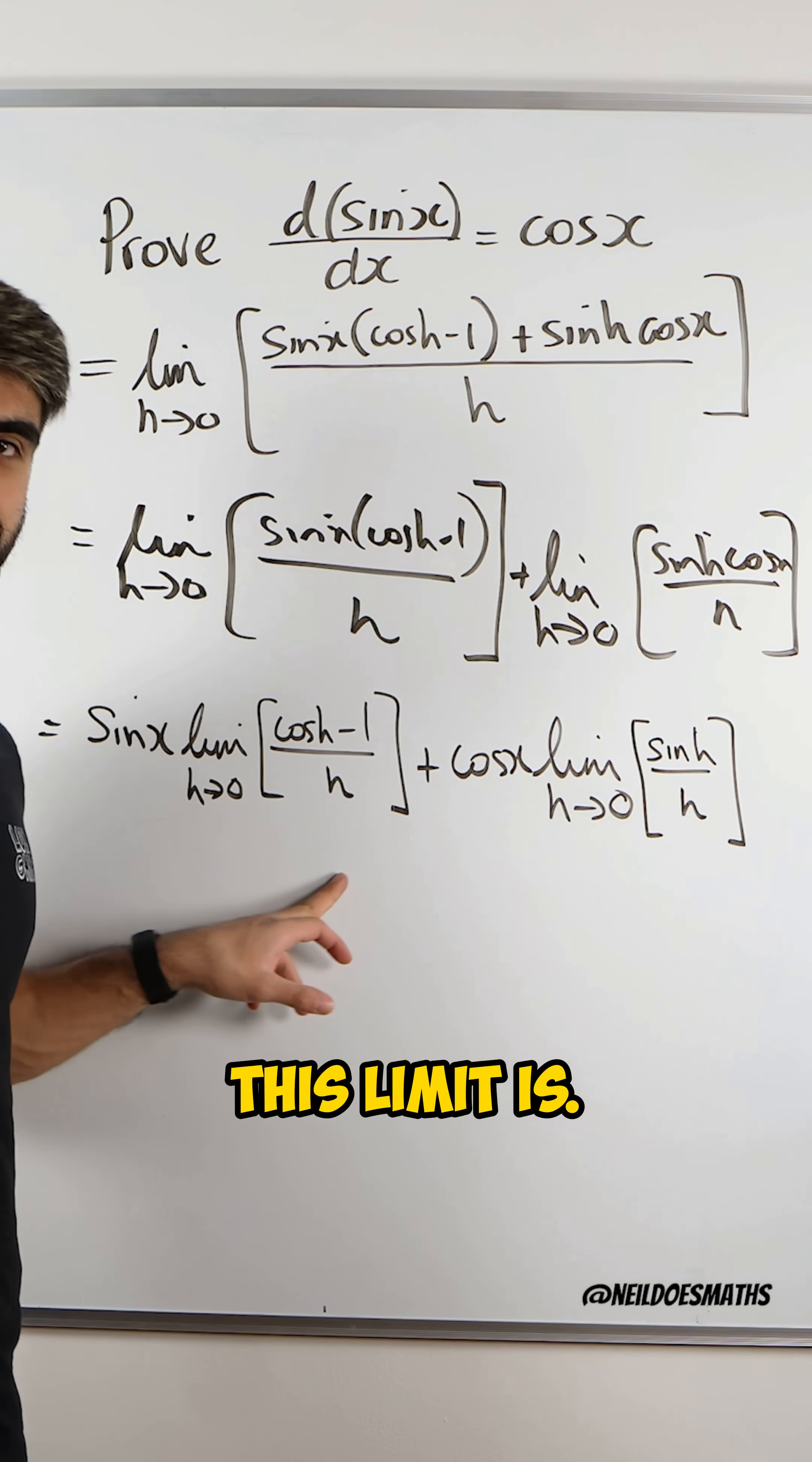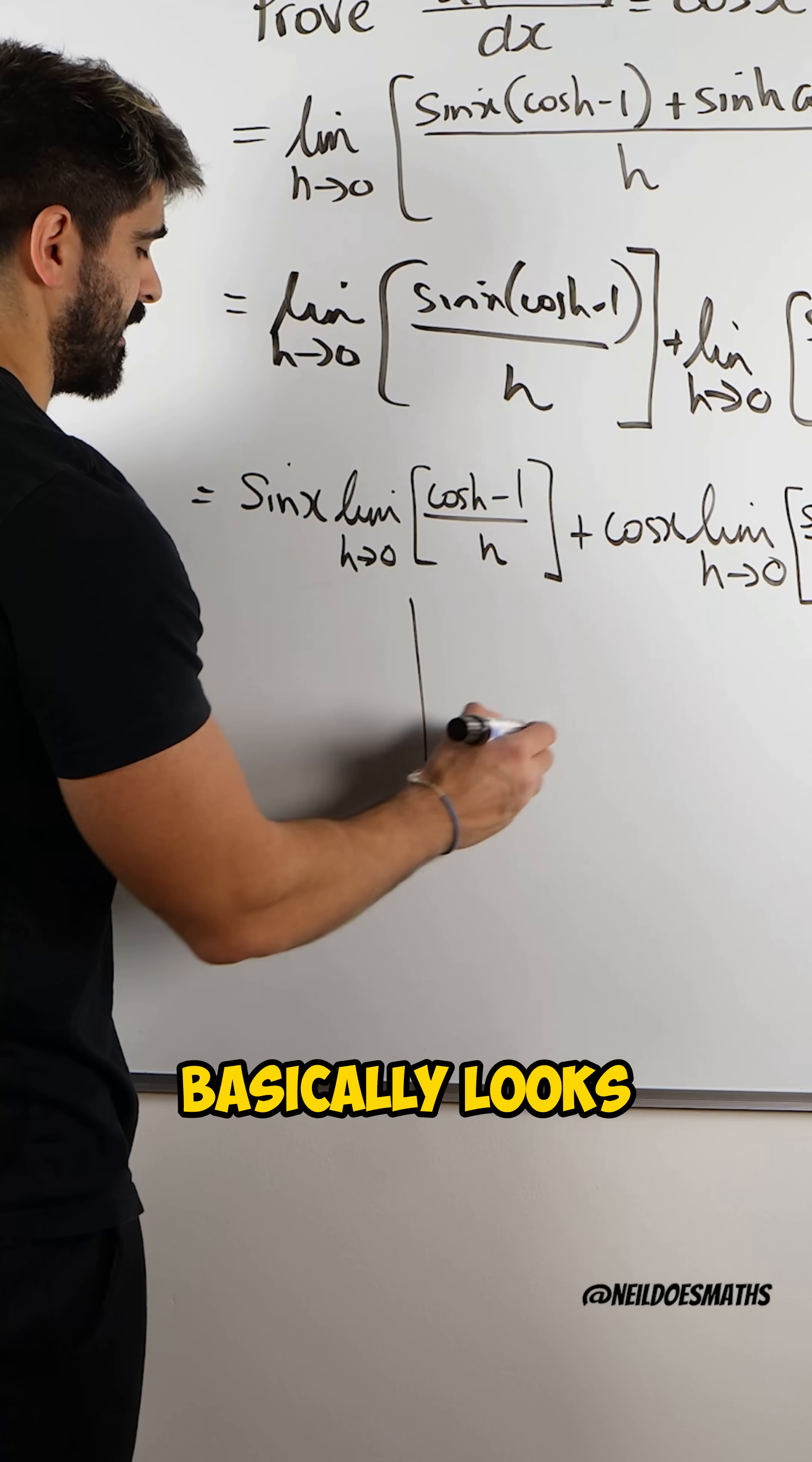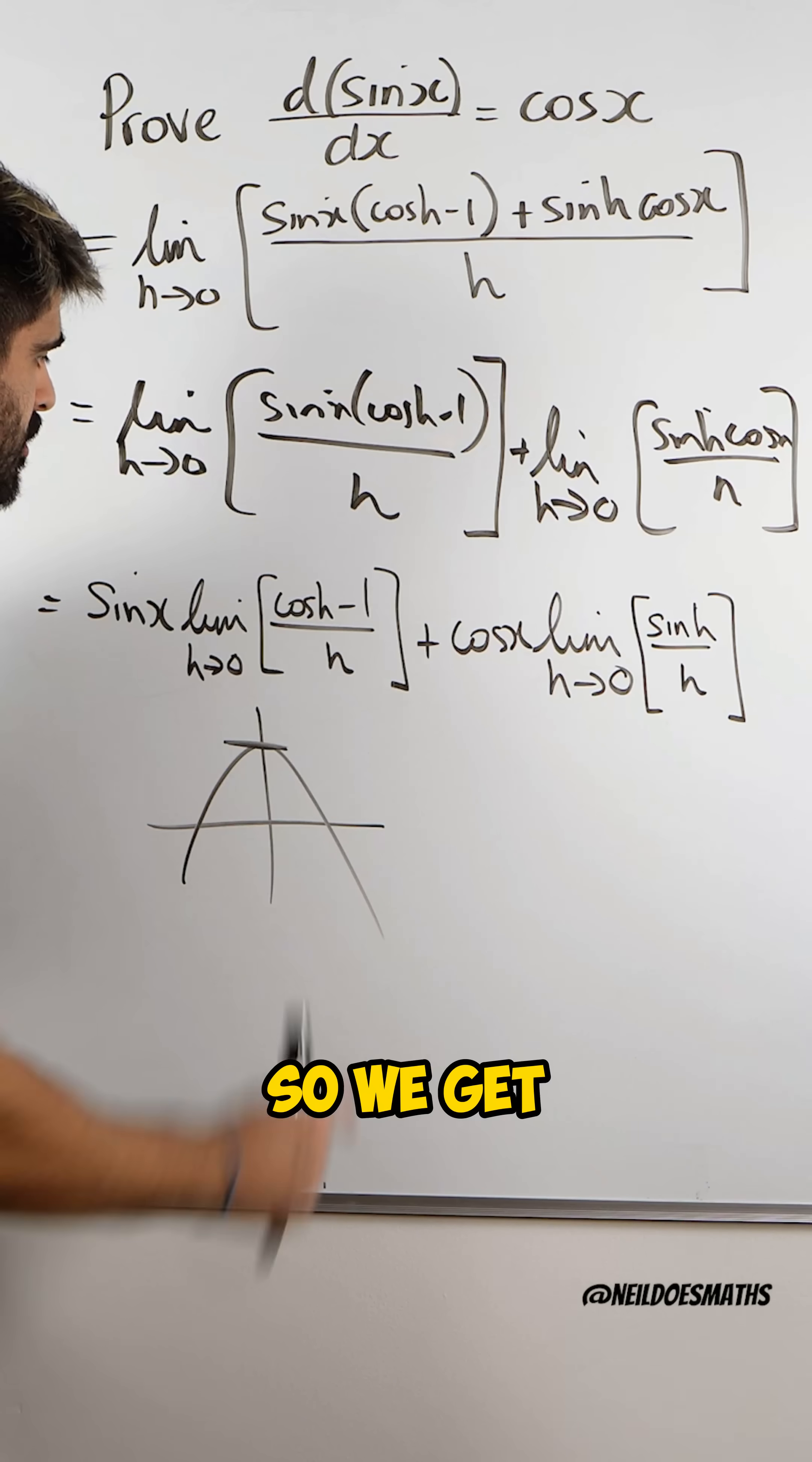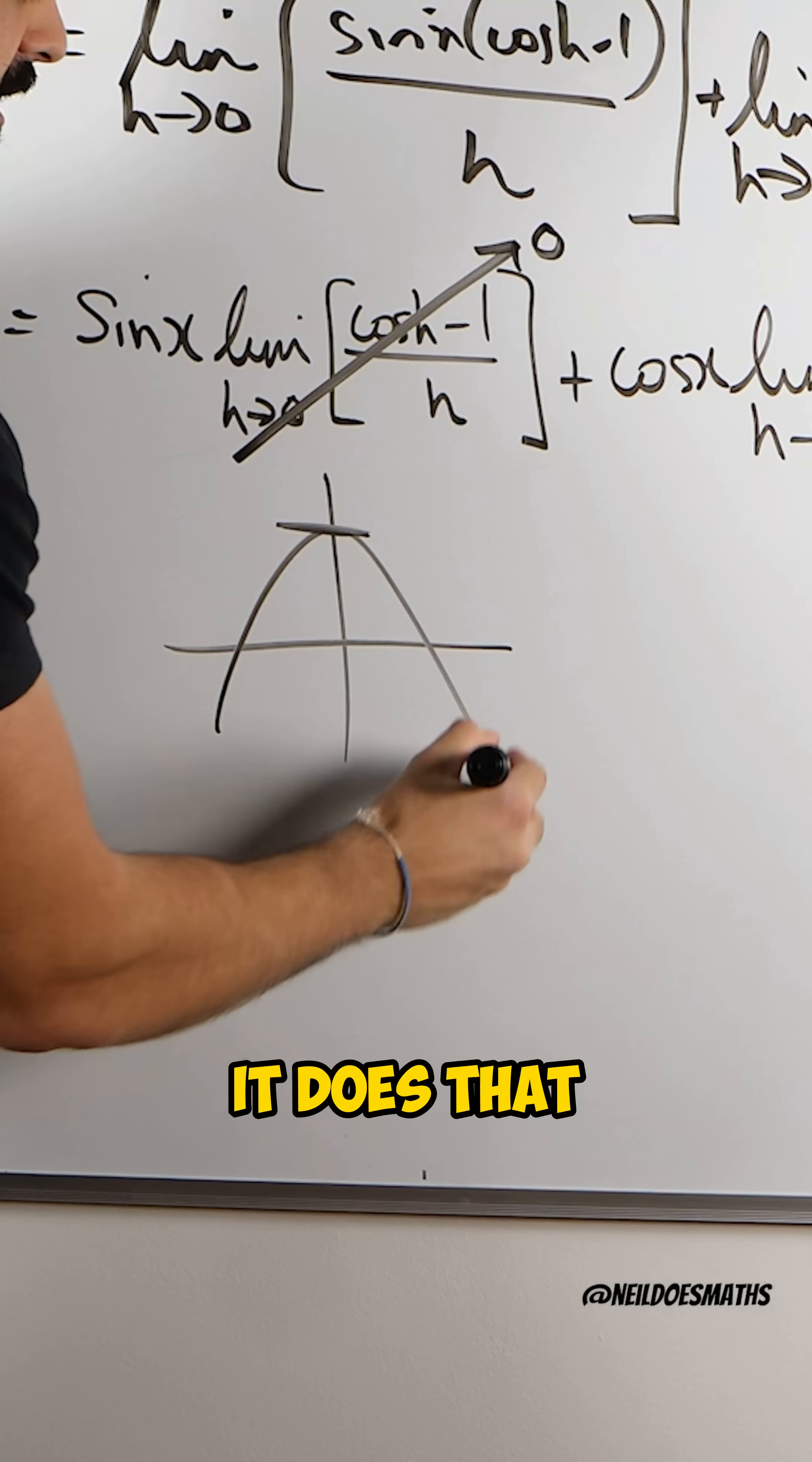Now here, we need to consider what this limit is. For small values of h, the cosine graph basically looks something like this. It's about one. So we get one minus one divided by h, which is zero. There's your cos graph.